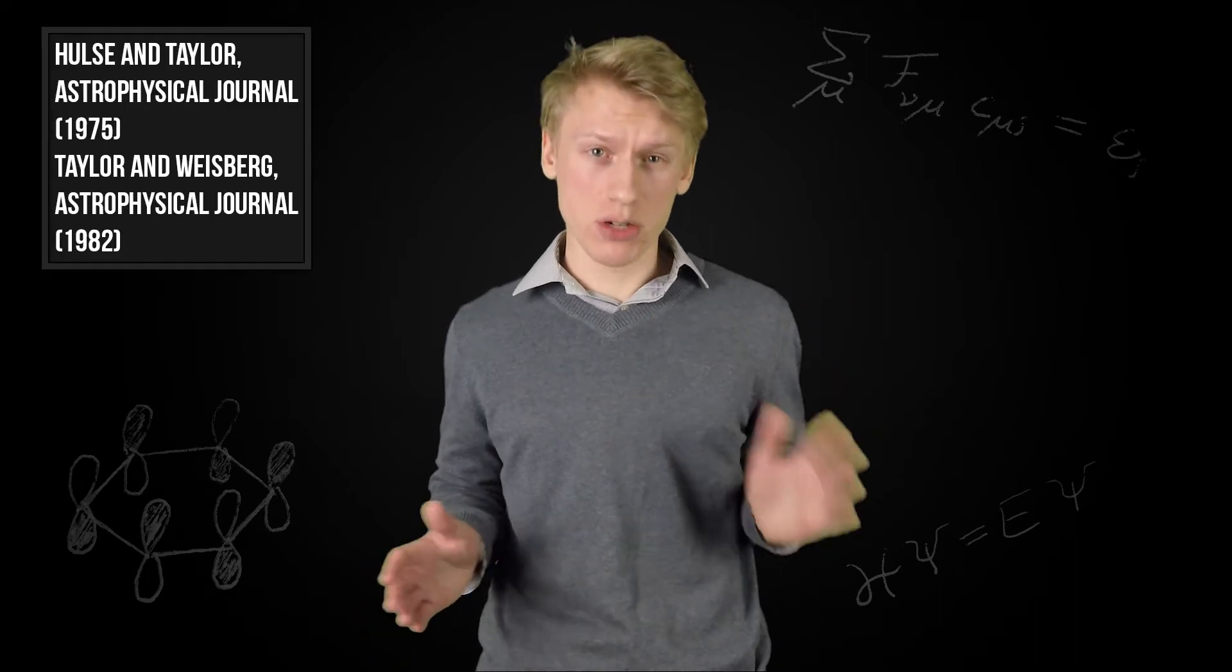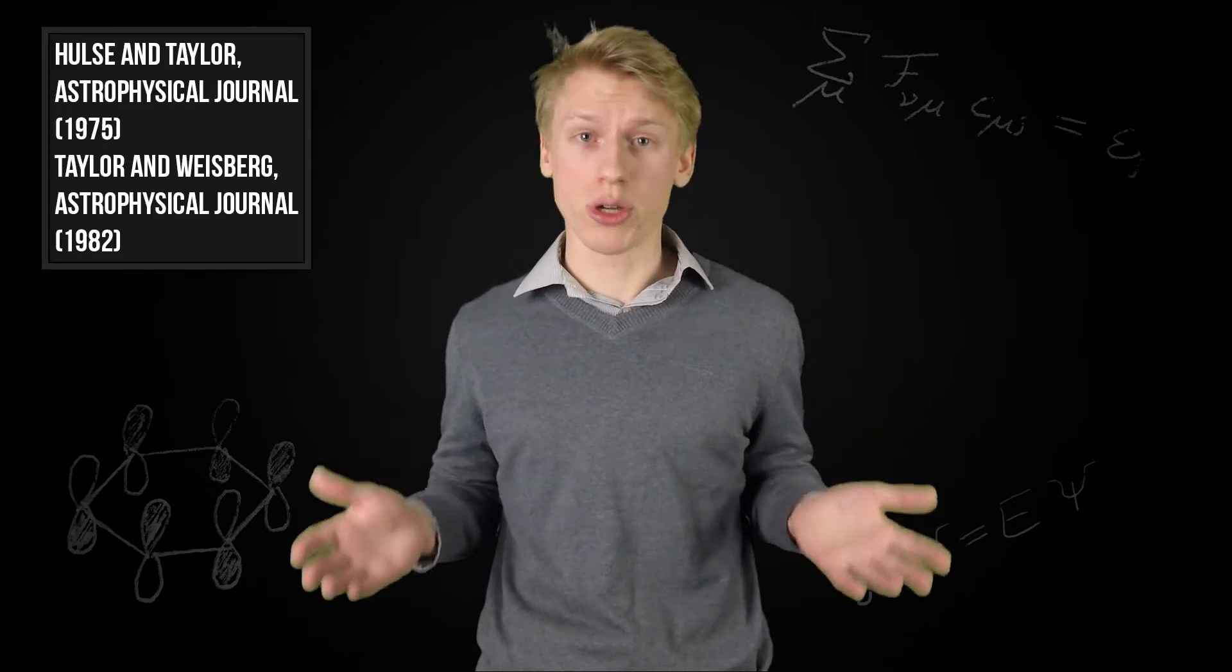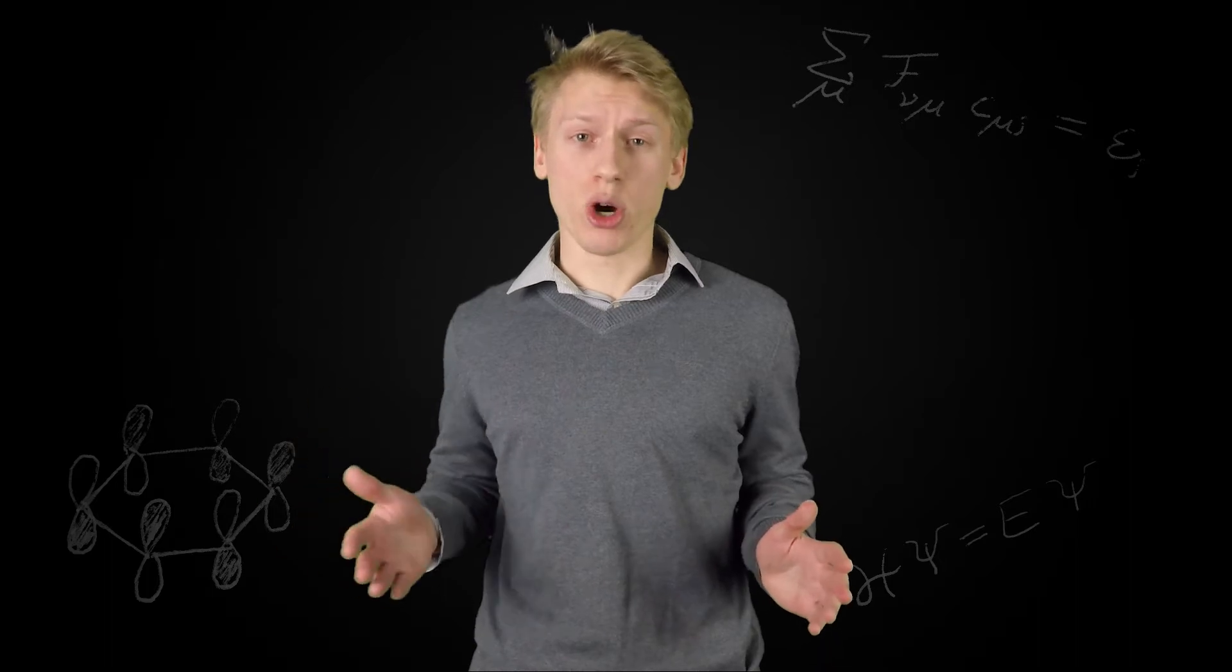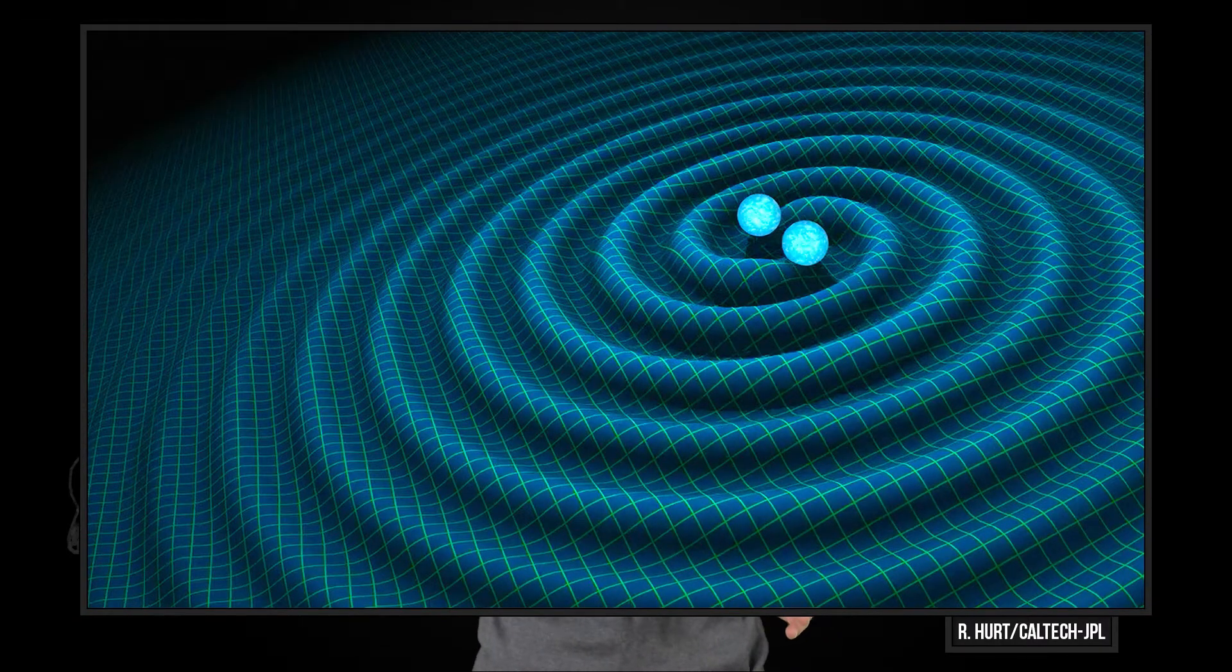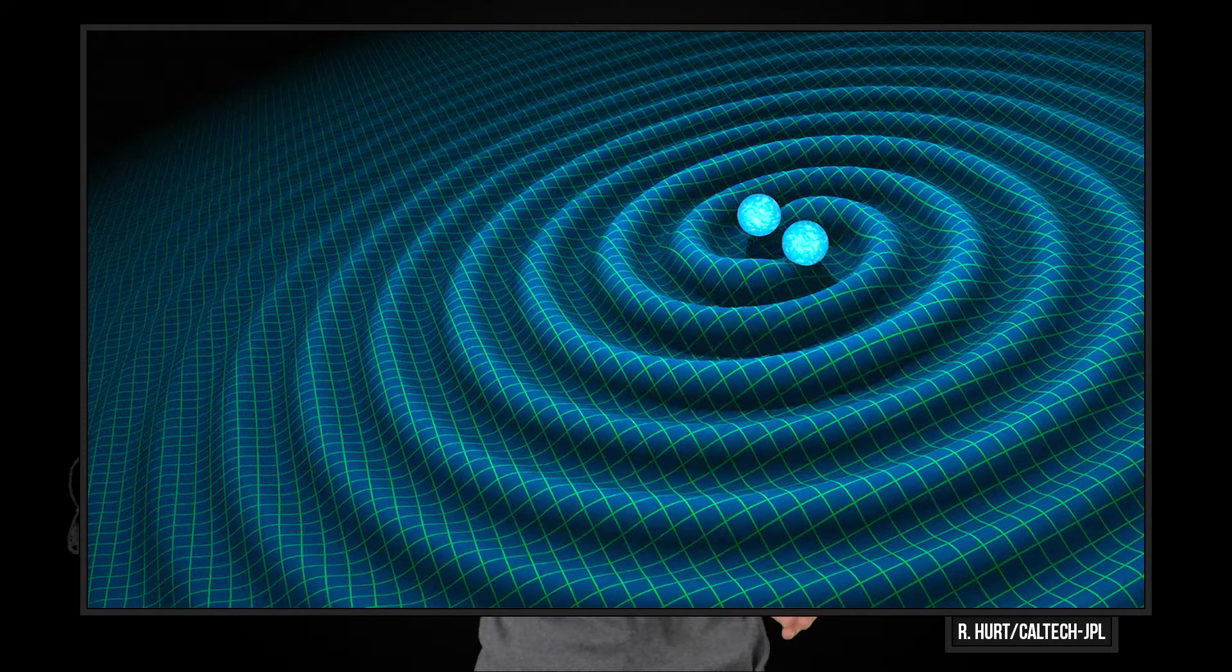In 1974, a binary pulsar system was discovered, with each of the neutron stars having about 1.4 solar masses. The decay of their orbit over time fit the energy loss due to gravitational waves as predicted by General Relativity perfectly. However, the gravitational waves themselves have never been detected directly.